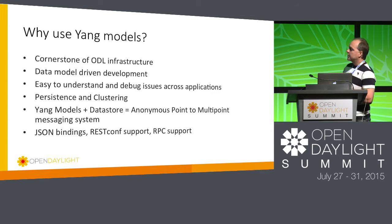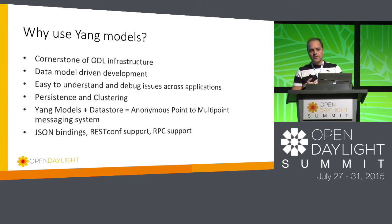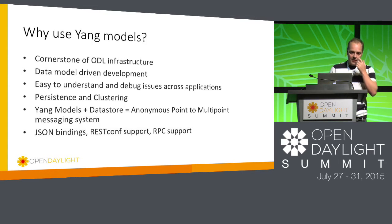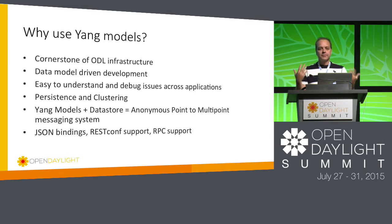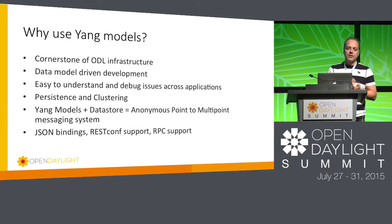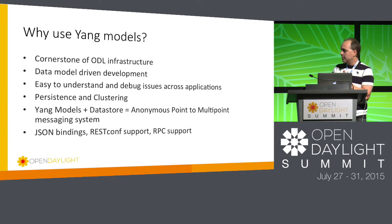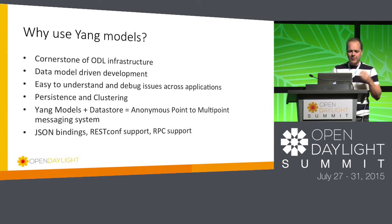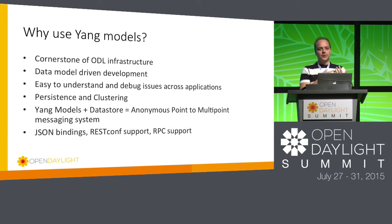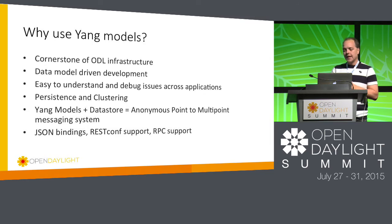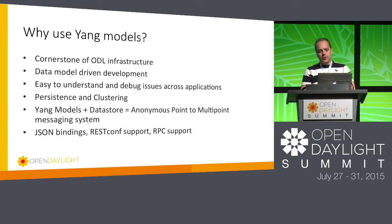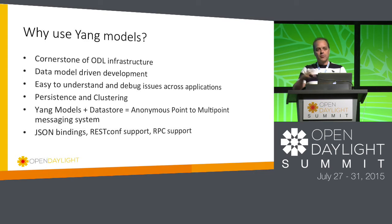Yang provides live documentation tied to the code, forcing you to update the Yang model when you want to do something different — unlike traditional documentation that never gets done. It's easy to understand and debug issues across applications. It gives you persistency and clustering for free. If you use Yang models in the Datastore, you get an anonymous point-to-multipoint messaging system — one of the greatest strengths in OpenDaylight. It also provides JSON bindings, RESTCONF support, and RPC support.